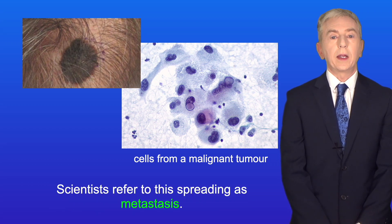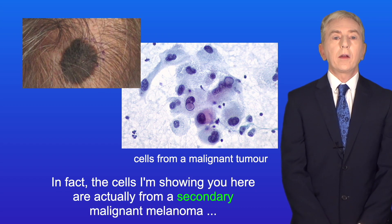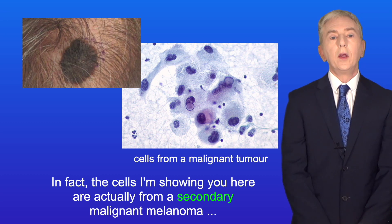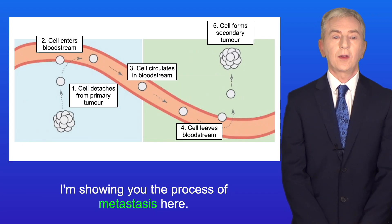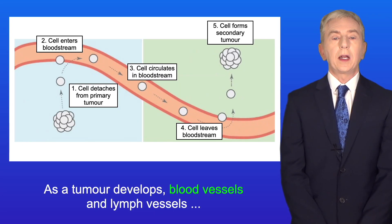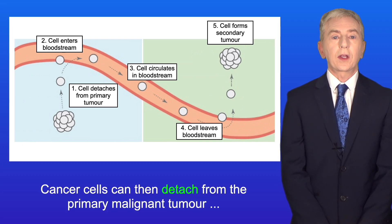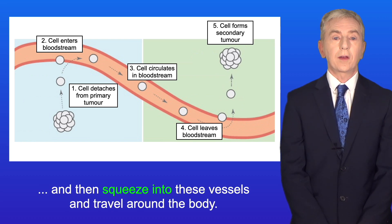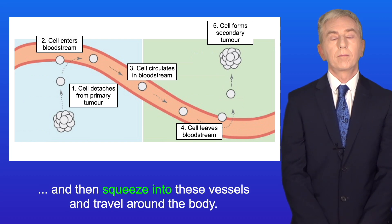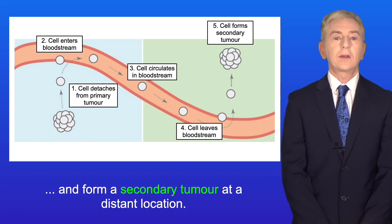Scientists refer to this spreading as metastasis, and the distant tumours are called secondary tumours. As a tumour develops, blood vessels and lymph vessels can grow into the tumour. Cancer cells can then detach from the primary malignant tumour, squeeze into these vessels, and travel around the body. The cancer cells can then pass out of the bloodstream and form a secondary tumour at a distant location.